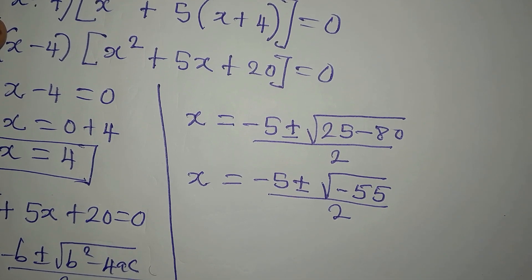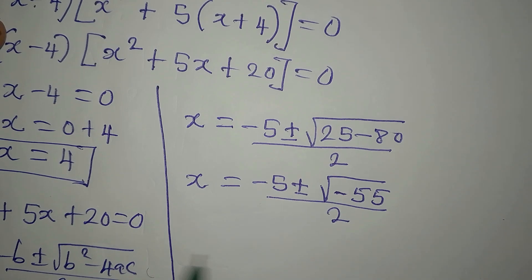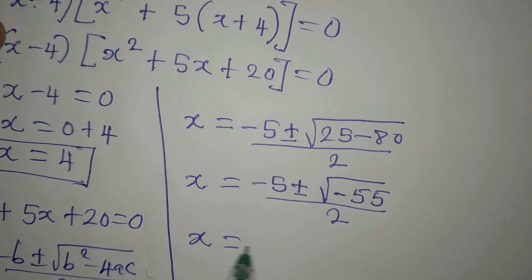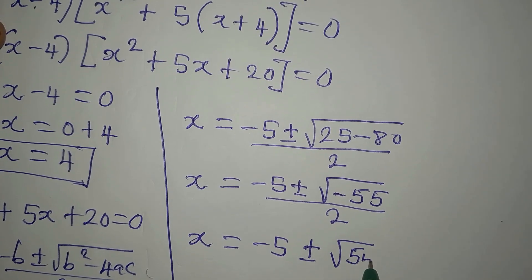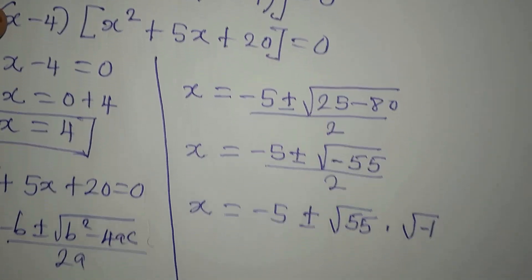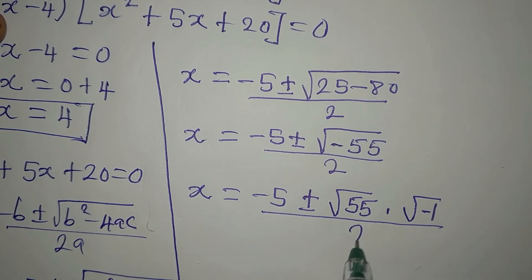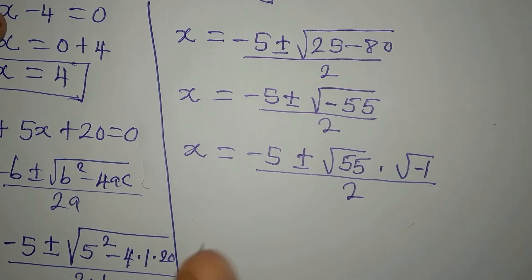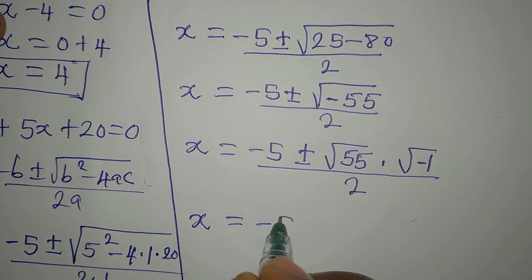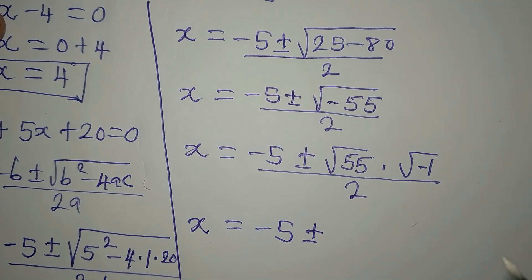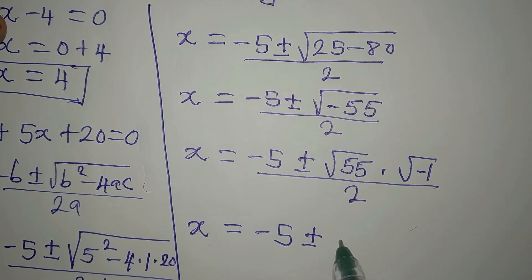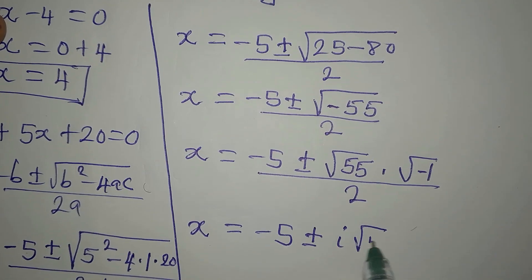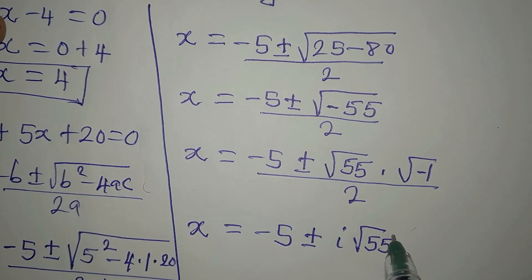We cannot get the square root of negative 55 with a standard calculator. So we factor out the negative: √(-55) = √55 × √(-1). Since √(-1) = i, we have x = (-5 ± i√55) / 2.